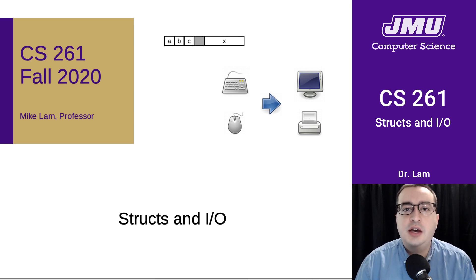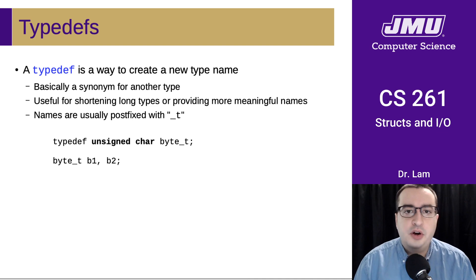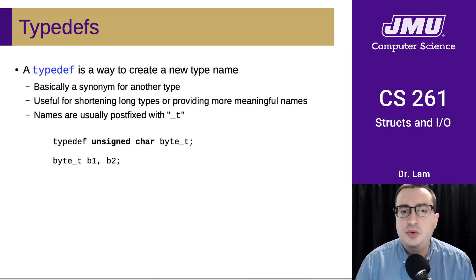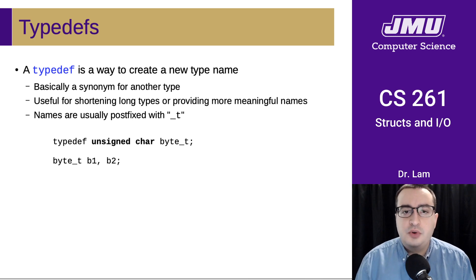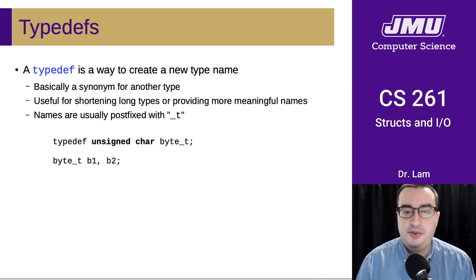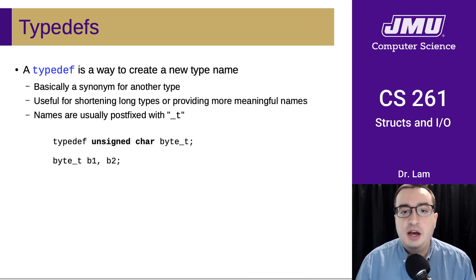But first we need to take a very brief aside and talk about something called a typedef. A typedef in C is really just a way to create a new type name, or an alias for an existing type, or a synonym for an existing type. This is useful for shortening long types and providing more meaningful names.